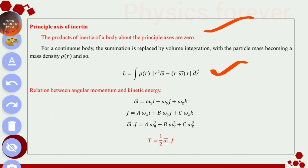After that, the relation between angular momentum and kinetic energy: T, represented as kinetic energy, is equal to half omega vector dot J, where T is the kinetic energy, omega is the angular velocity, and J is called the angular momentum. These are the most important relationships about angular momentum and kinetic energy.